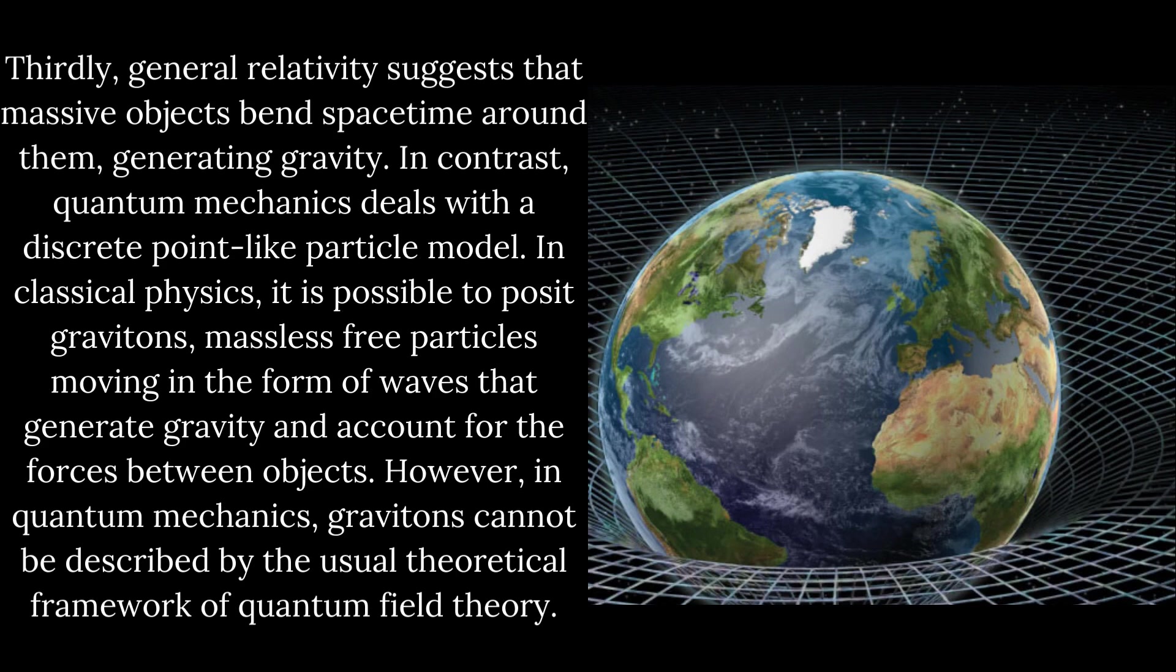Thirdly, general relativity suggests that massive objects bend spacetime around them, generating gravity. In contrast, quantum mechanics deals with a discrete point-like particle model. In classical physics, it is possible to posit gravitons, massless free particles moving in the form of waves that generate gravity and account for the forces between objects. However, in quantum mechanics, gravitons cannot be described by the usual theoretical framework of quantum field theory.